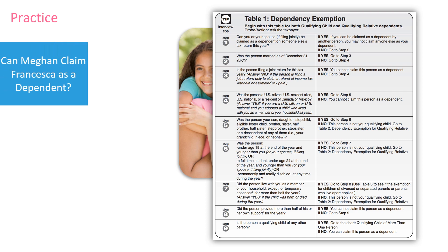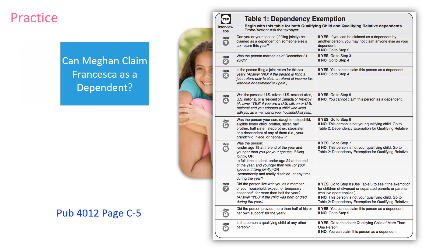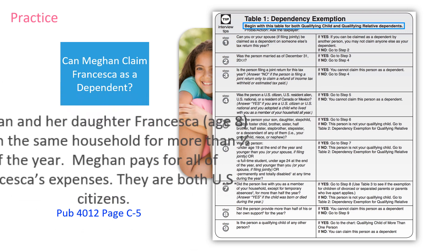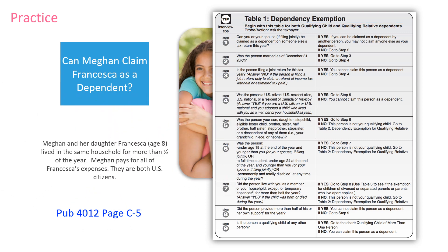Remember Megan from our discussion of filing status? You determined that her daughter Francesca was a qualifying person and that Megan could file head of household. We will now determine if she can claim Francesca as a dependent. Notice that the top of this chart says to begin with this table for both qualifying child and qualifying relative. Megan and her daughter Francesca, age eight, lived in the same household for more than half the year. Megan pays for all of Francesca's expenses. They are both U.S. citizens. Let's start with step one: can you be claimed as a dependent on someone else's tax return? Megan supports her own household financially, so she's not going to be claimed as a dependent by someone else. The answer is no.